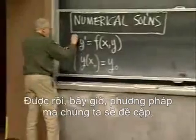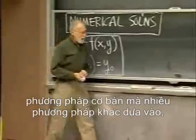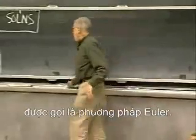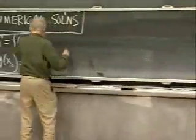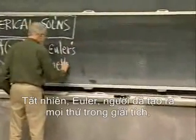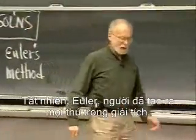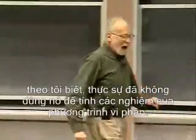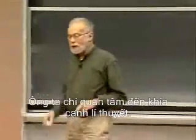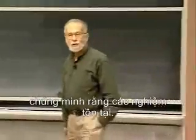The method we're going to talk about — the basic method, of which many others are merely refinements — is called Euler's method. Euler, who did everything in analysis, didn't actually use it to compute solutions of differential equations as far as we know. His interest was theoretical; he used it as a method of proving the existence theorem, proving that solutions existed.